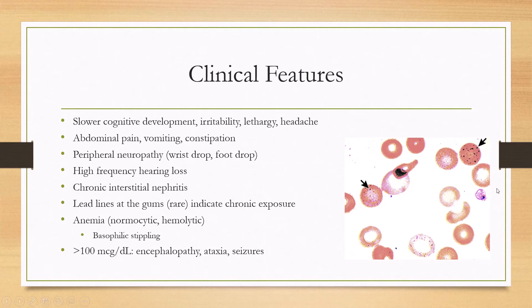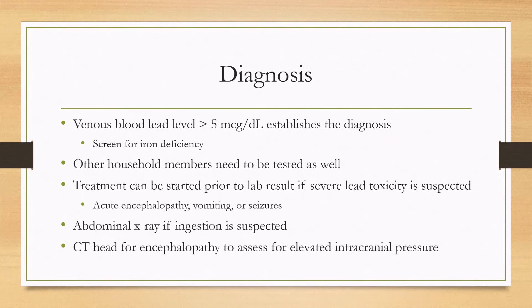With high lead levels greater than 100, there can be acute onset encephalopathy, seizures, and ataxia. Diagnosis is straightforward — a venous blood lead level greater than 5 establishes the diagnosis, and iron deficiency should also be screened for. Other household members need to be tested. Treatment can be started prior to obtaining lab results if severe toxicity is suspected, such as acute encephalopathy, seizures, or acute vomiting. An abdominal X-ray is done when ingestion is suspected, and a CT head is done for encephalopathy to assess for elevated intracranial pressure — with caution if performing a lumbar puncture.